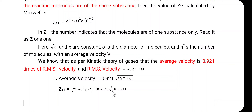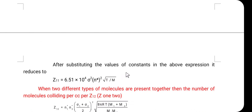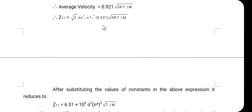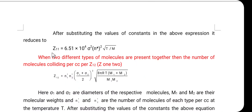The average velocity is 0.921 times the RMS velocity, and the RMS velocity is √(3RT/M). After substituting the values of constants — π = 3.14 and R = 8.31 × 10⁷ erg/mol/K — the equation reduces to: Z11 = 6.51 × 10⁴ · σ² · (n*)² · √(T/M).